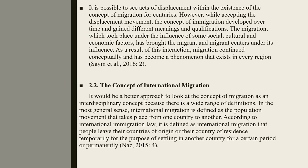The concept of international migration — it would be a better approach to look at migration as an interdisciplinary concept because there is a wide range of definitions. In the most general sense, international immigration is defined as the population movement that takes place from one country to another. According to international immigration law, it is defined as international immigration where people leave their countries of origin or their country of residence temporarily or permanently for the purpose of settling in another country.